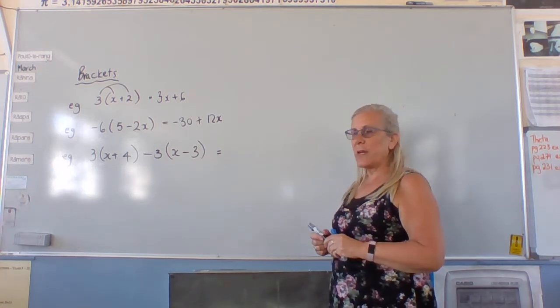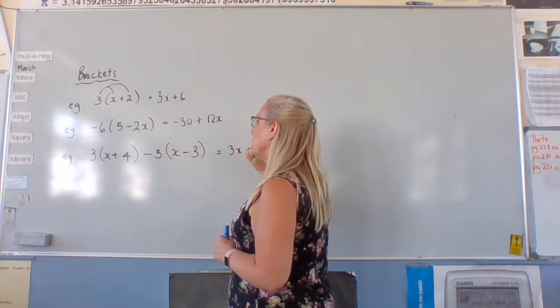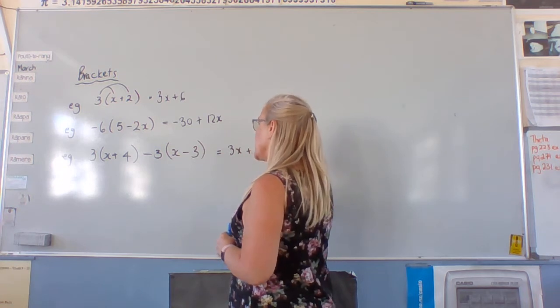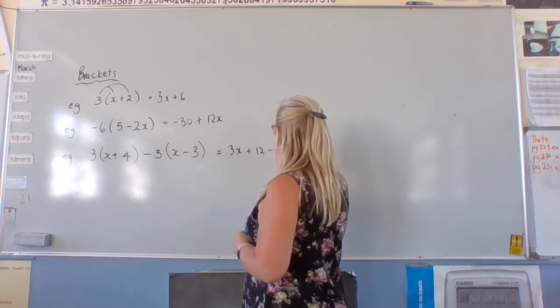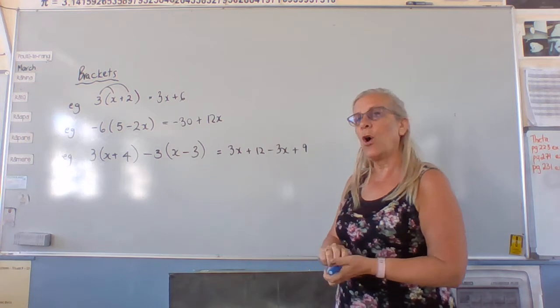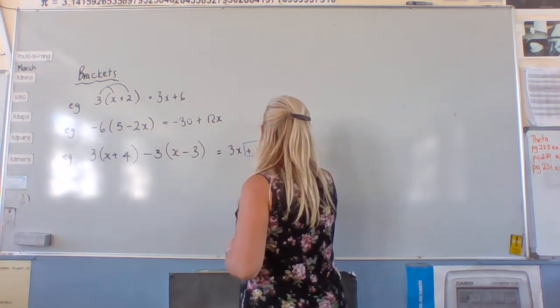We multiply out the brackets and collect like terms. Three x plus twelve minus three x plus nine. Remember, the sign goes with whatever follows it.